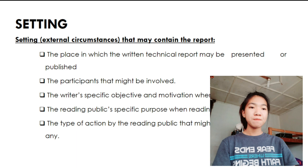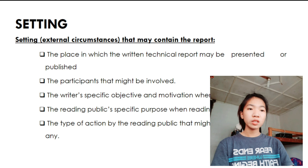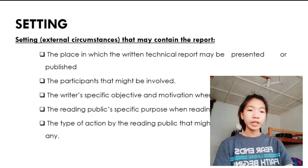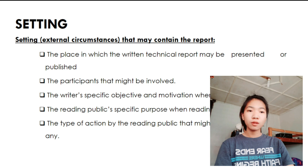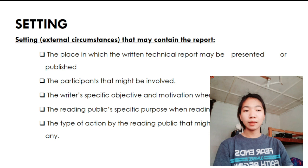Which is the place, participants, writers, reading publics, and the action, the type of action. The place in which the written technical report may be presented or published. Second, the participant that might be involved. For instance, the writer and the specific reading public. Third is the writer's specific objective and motivation when writing the report. Fourth is the reading public's specific purpose when reading. And last, the type of action by reading public that might be expected, if any.